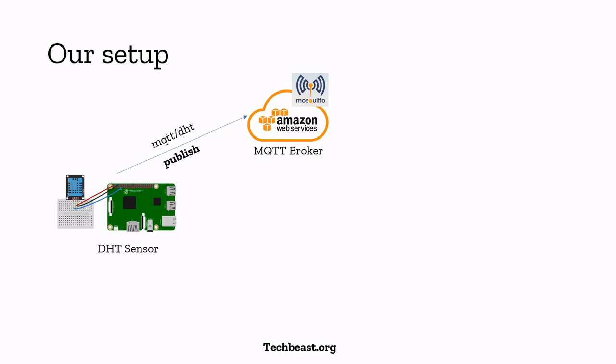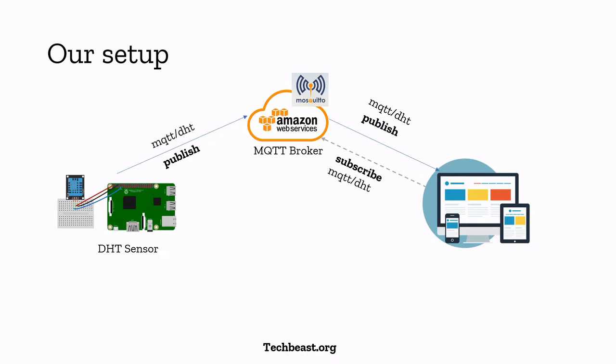We are going to connect a DHT sensor to the Raspberry Pi and publish the data to the broker on the topic 'mqtt/dht' — the topic can be anything you wish. Then we are going to write a simple HTML web page to subscribe to the data and display it. The communication between the broker in the cloud and your browser will use WebSocket, because the browser does not directly support the MQTT protocol. So we run MQTT over WebSocket for real-time sync between the sensor and the browser.